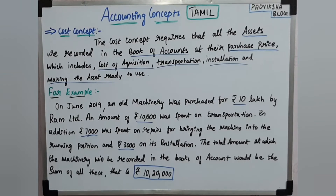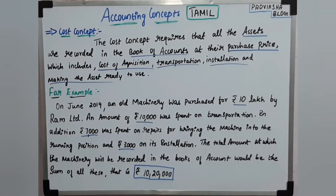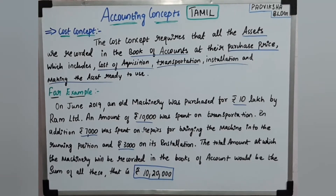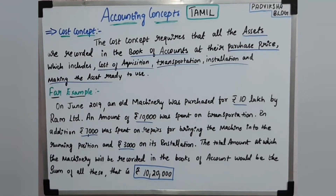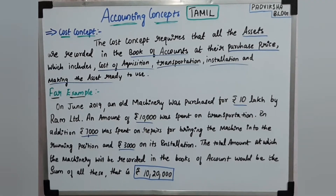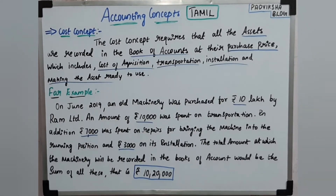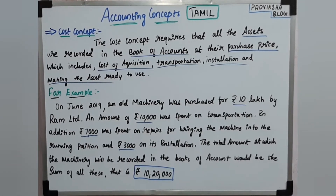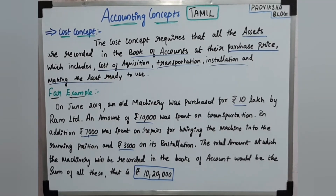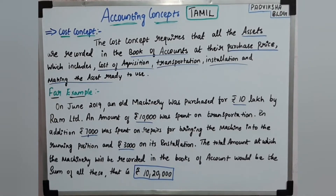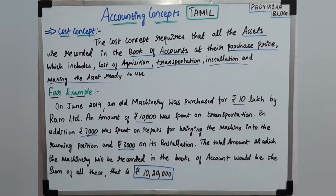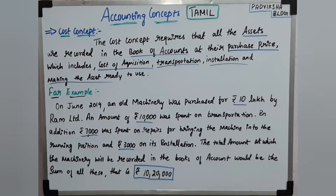Assets are recorded in books of accounts at their purchase price. The TV purchase price is 40,000, plus cost of acquisition, transportation, and installation — making the asset ready to use — totalling 41,500. That full amount is recorded as our asset cost.